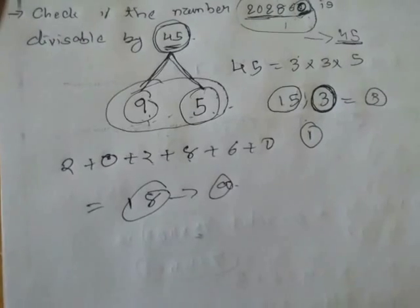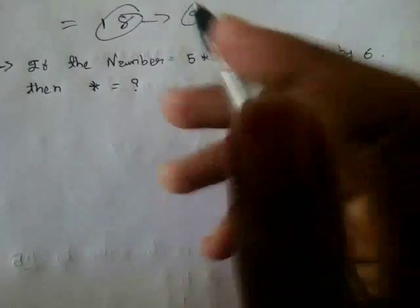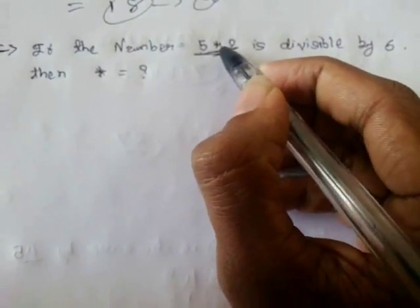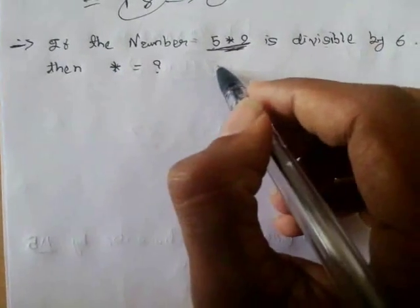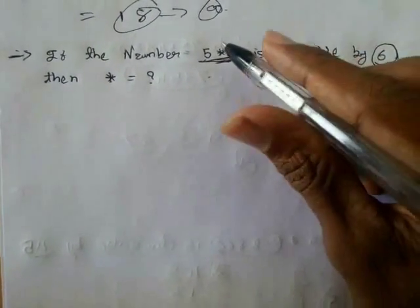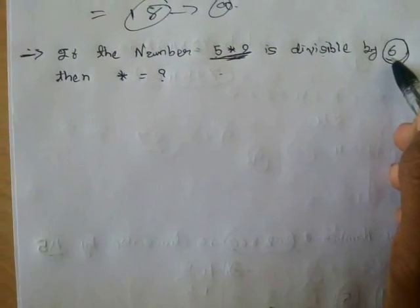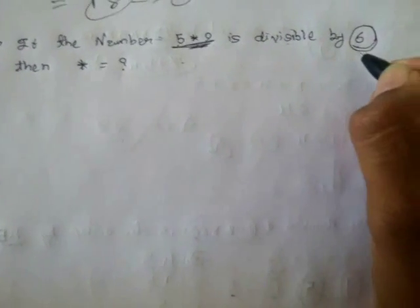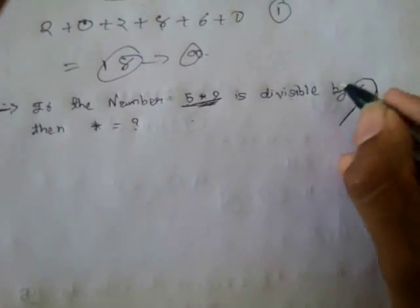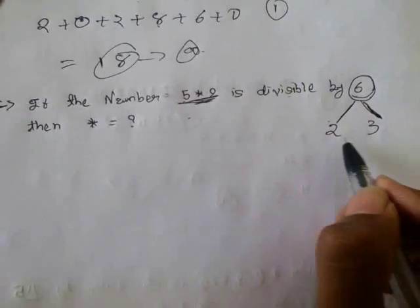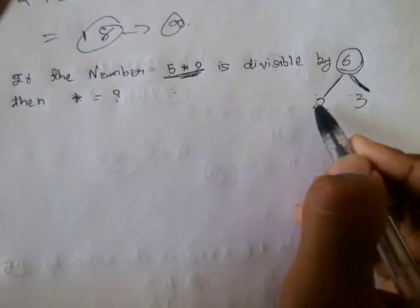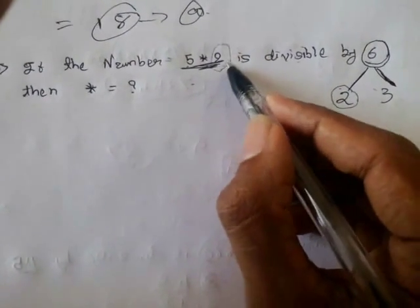See how easy it is when we know the basic rules of divisibility. The next question says: if the number 5★2 is divisible by 6, find the value of star. We don't have a specific rule for 6, but we can split it into two co-prime factors: 2 and 3. We check if the number is divisible by both 2 and 3.